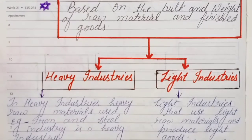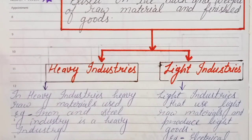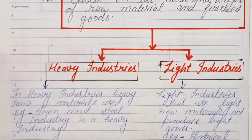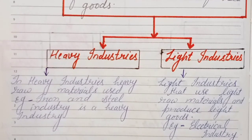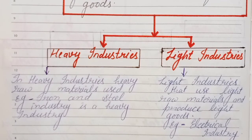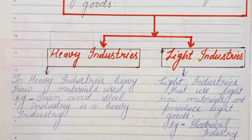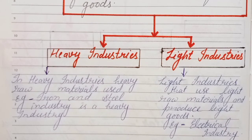On the basis of bulk and weight, there are two types: heavy industries and light industries. In heavy industries, heavy raw materials are used and heavy products are produced. For example, iron and steel industry falls in the category of heavy industries. In light industries, light raw materials are used and light goods are produced. For example, electrical industries, wires, etc.